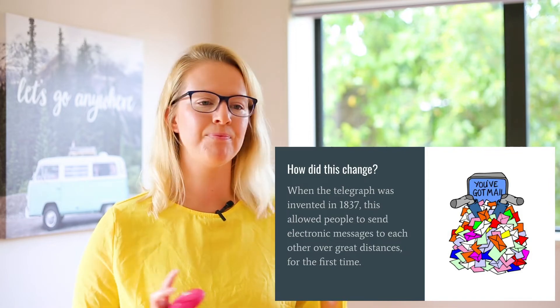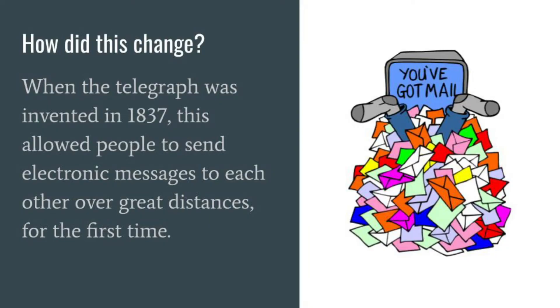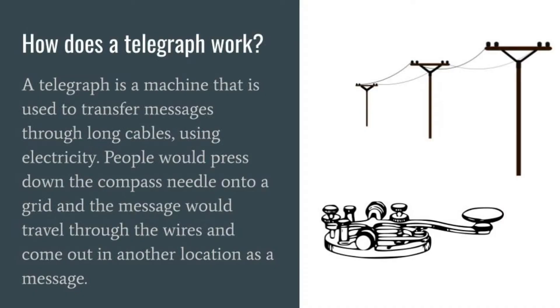So when did this change? When the telegraph was invented in 1837, this allowed people to send electronic messages to each other over great distances for the very first time. So what exactly is a telegraph? A telegraph is a machine that is used to transfer messages through long cables using electricity. People would press down on a compass needle onto a grid and the message would travel through the wires and come out in another location as a message.